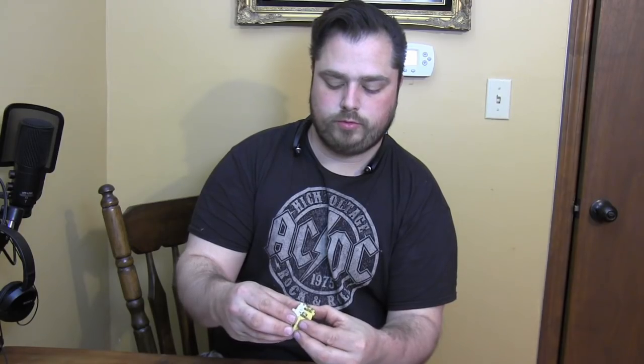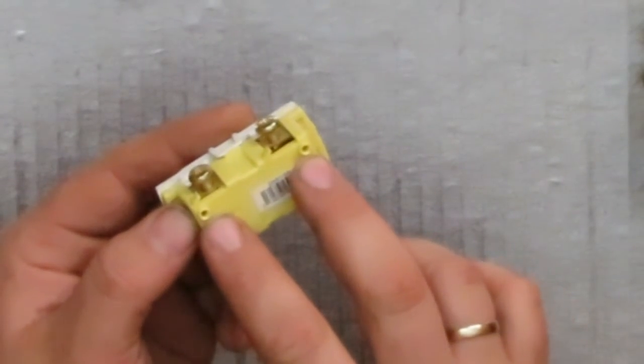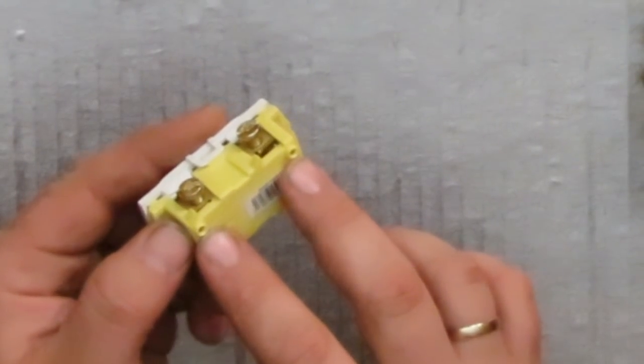As you see on the single pole switch, we've got our two screws which is the top and bottom, and each one has a corresponding stab in.